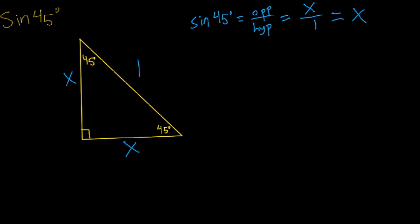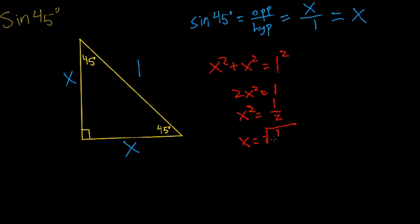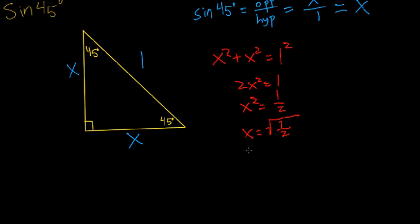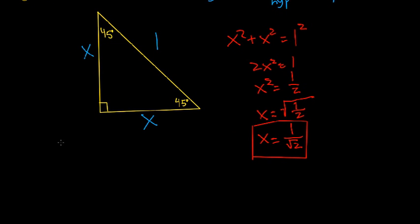Finding x is actually pretty simple — we just use the Pythagorean theorem. So x squared plus x squared equals 1 squared. That gives us 2x squared equals 1, so x squared equals one half. Now we take the positive square root, because it's the length of a side of a triangle and can't be negative. The square root of one half: the square root of 1 is just 1, and we write square root of 2 in the denominator. So x equals 1 over the square root of 2, which means sine of 45 degrees is 1 over the square root of 2.